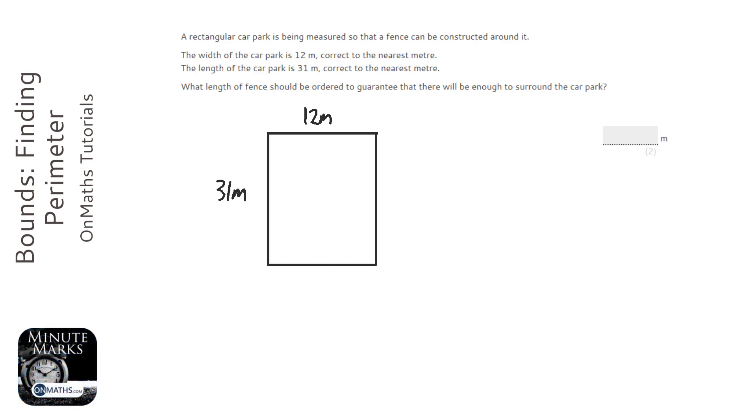So to work out the distance of the fence needed, since the fence goes all the way around the car park, it's going to be 12 plus 31 plus 12 plus 31, which is 86. So the perimeter is 86.